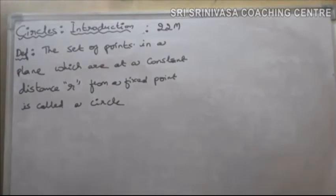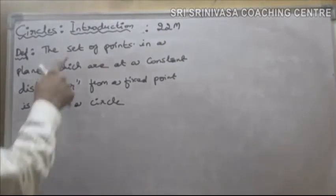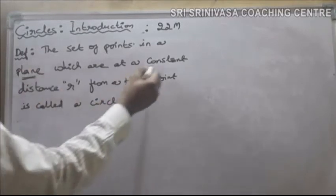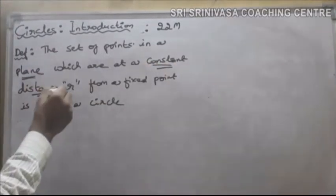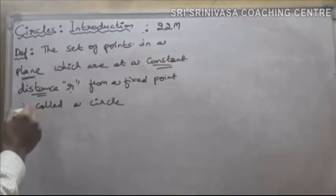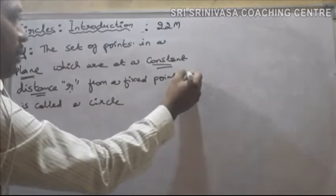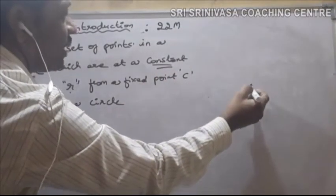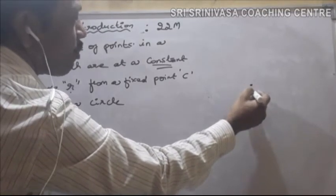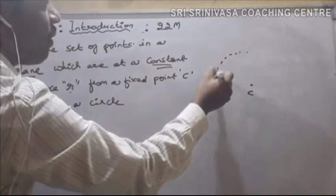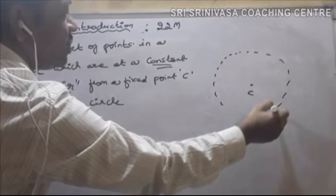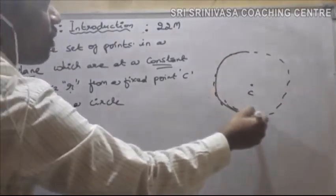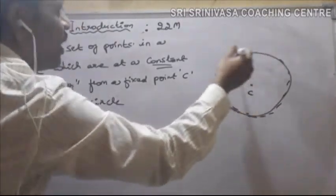So what is a circle? A circle is a set of points in a plane which are at a constant distance from a fixed point. Let us take a circle, let us take a fixed point C. Now let me take some points which are at a fixed distance from C. Then this set of points is called a circle.